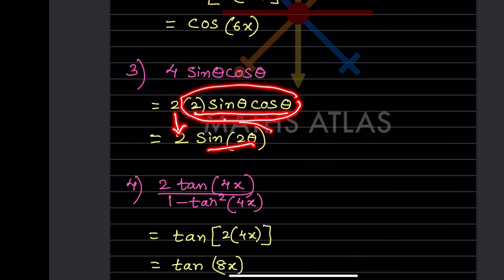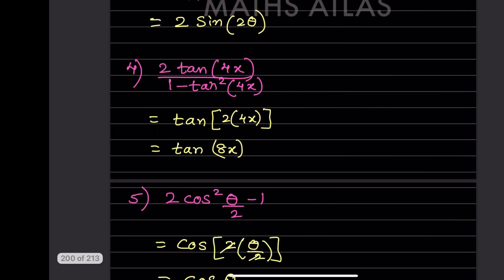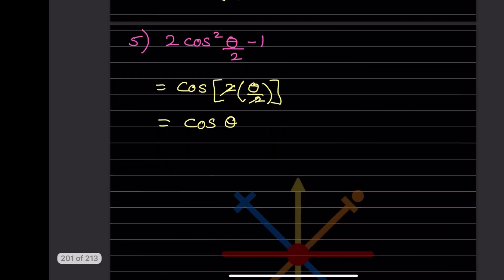Next we have 2tan4x divided by 1 - tan²4x. Recognizing the double angle formula for tangent: 2tanθ/(1-tan²θ) = tan2θ, where θ = 4x, the answer is tan8x.